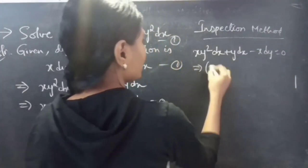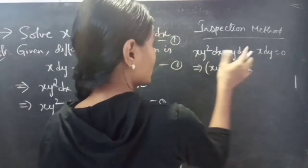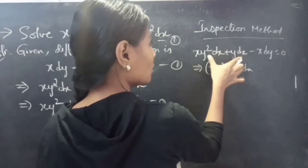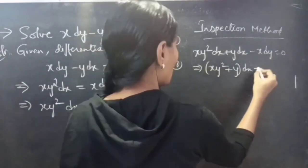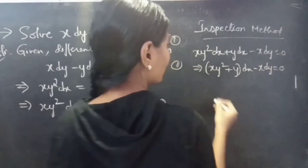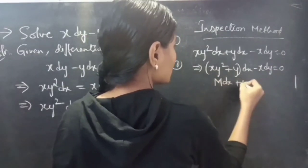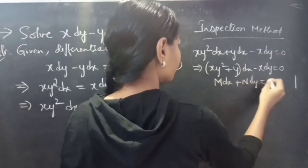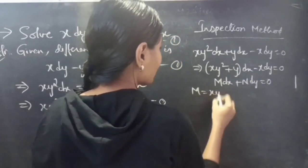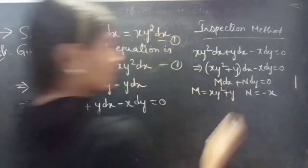We can write it as x y squared plus y, taking dx common from the first two terms, minus the third term as it is, which gives us the form M dx plus N dy equals to 0, where M equals to x y squared plus y and N equals to minus x.